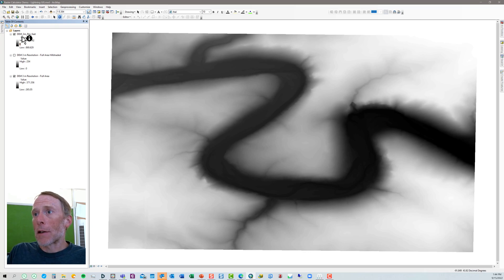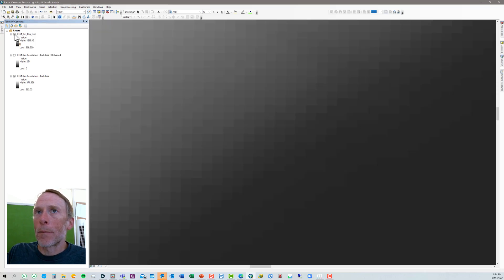But if you look at the raster itself over here there's no difference. Let me turn the feet raster off. There's the metric. No difference. Even if we zoom in, there's no difference here. All we did was change the raster values. It's that simple.